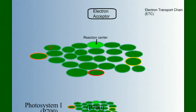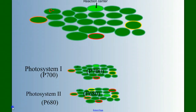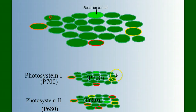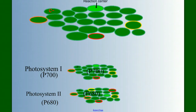When we cover the details of light reactions, we'll talk about two different photosystems: Photosystem I, also known as P700, and Photosystem II, known as P680. They have slightly different compositions of photopigments, so they specialize in different wavelengths of light, and we'll discuss which light reaction pathways they're involved in in our later video.